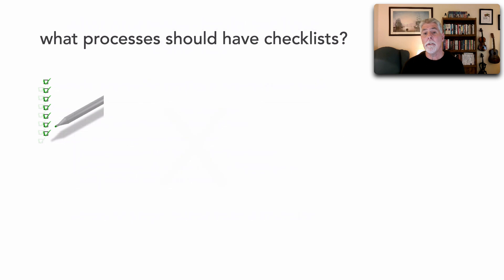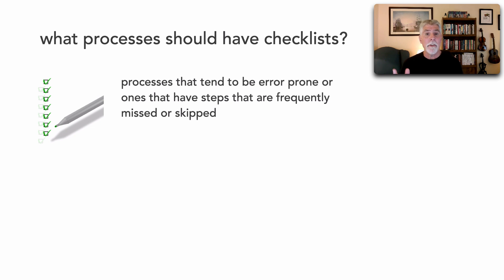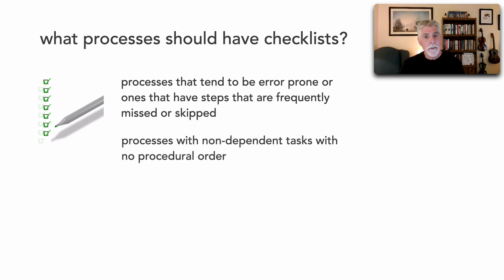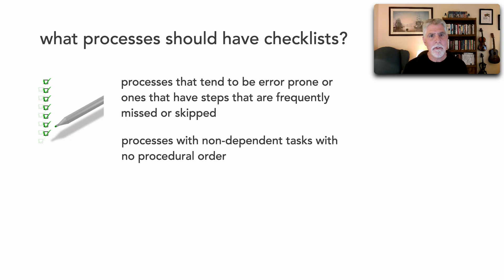What stuff does belong in a checklist? Processes that tend to be error-prone, or those that have steps that are frequently missed or skipped. We don't have any of those in software development, do we? Of course we do. Those things that are error-prone are exactly the kind of things we want checklists for. Also, processes that tend to be error-prone but don't have any dependent tasks — no procedural order to them.